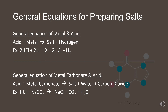Here are the general equations for preparing common salts. The general equation of metal plus acid is: acid plus metal gives salt plus hydrogen. For example, 2HCl plus 2Li gives 2LiCl plus H₂. Hydrochloric acid plus lithium gives lithium chloride plus hydrogen.